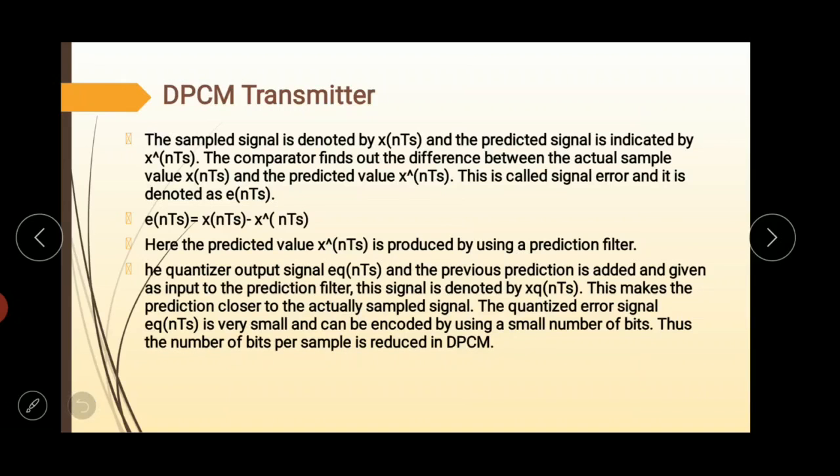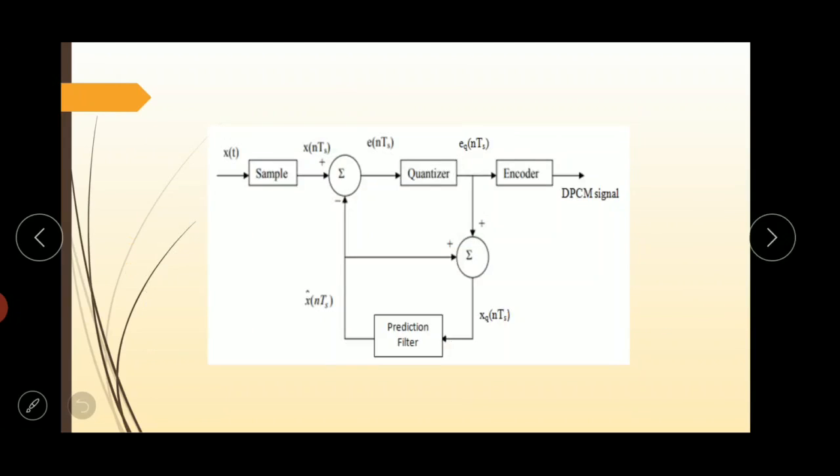Next is the DPCM transmitter. This is the theory part. This is the block diagram of transmitter. The sample signal is denoted by X of NTS. The first block of this block diagram is sampler. Here we give the input signal X of T to the sampler.